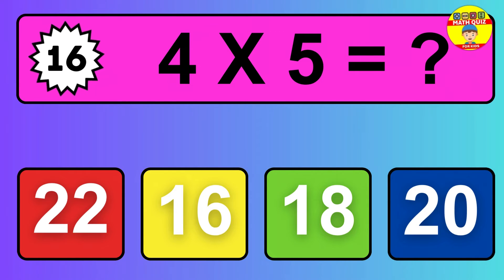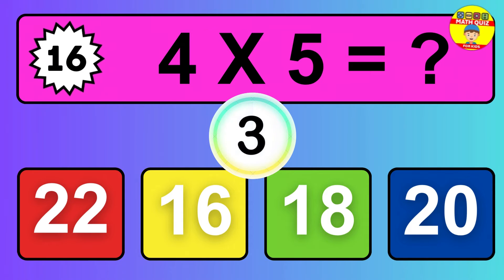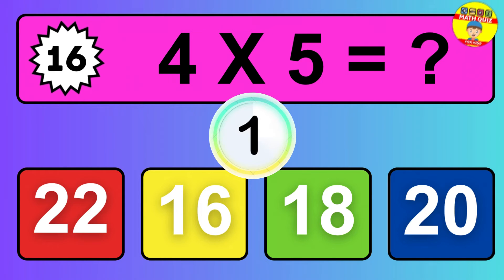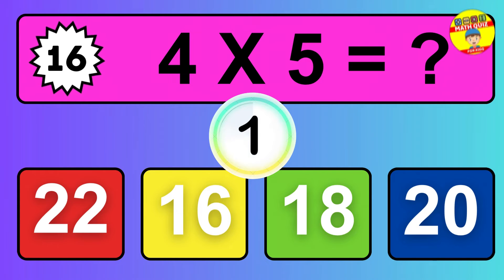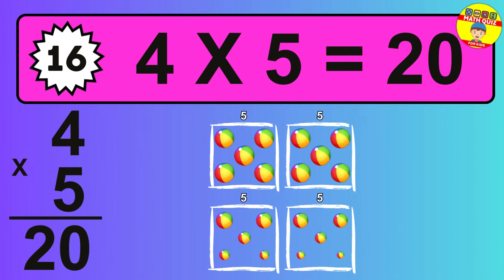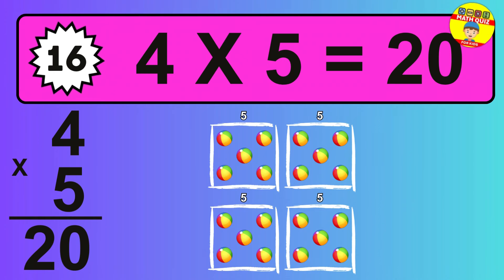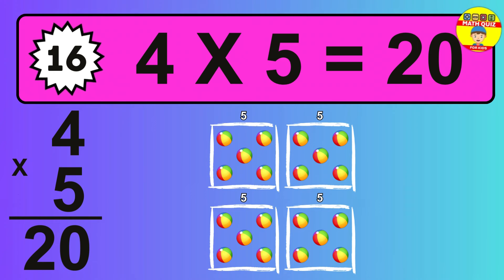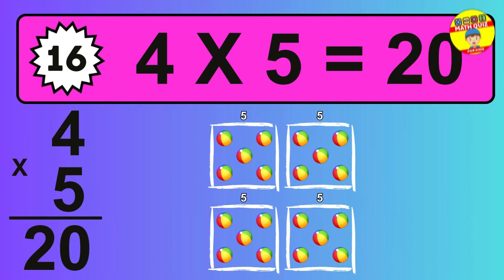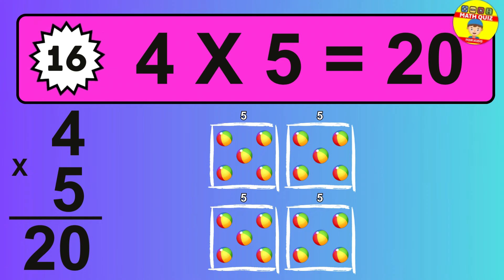Question 16. 4 times 5 equals what? The answer is 4 times 5 is 20. To calculate, we have 4 groups with 5 balls each one. So, how many balls do we have? 20 balls.